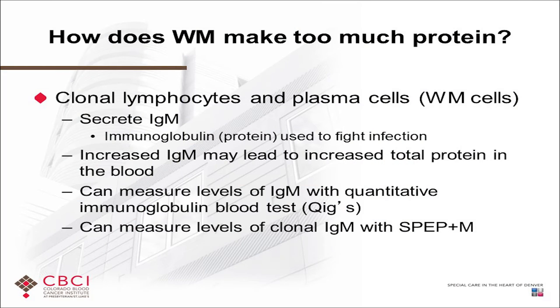How does WM make too much protein? The lymphoplasmacytic cells make an IgM which accumulates in the bloodstream. You can measure that with the immunoglobulin test. There's also a test called electrophoresis and M protein spike that all patients need to know. Most antibodies in our blood — immunoglobulins like IgA or IgG — occur alone as one unit. But in Waldenstrom's, five of them stick together at once, making it a very large protein. If you get a lot of that protein in your blood, that's what makes it not flow well — makes it too viscous.